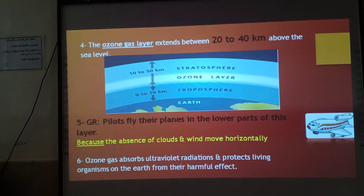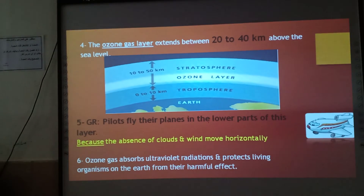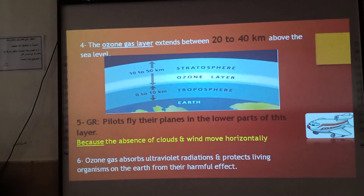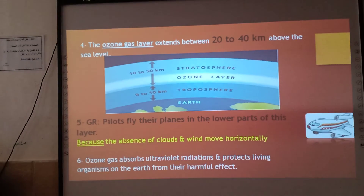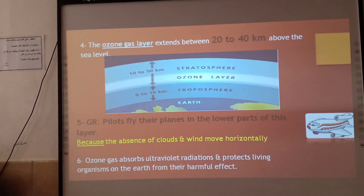The ozone gas absorbs the ultraviolet radiation and protects living organisms on the earth from their harmful effect. So the ozone layer protects us from the harmful ultraviolet radiation of the sun.